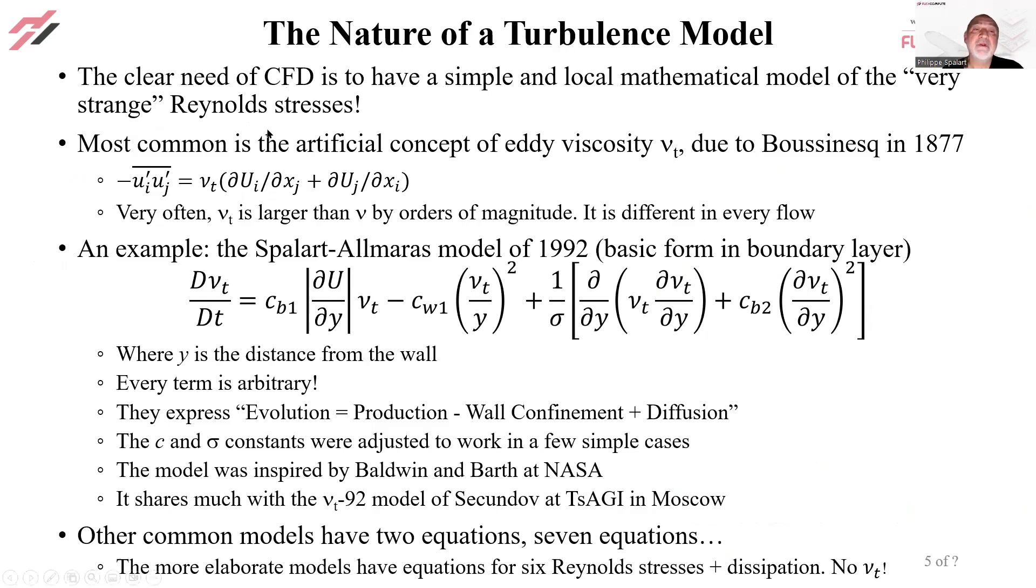Most common is the artificial concept of eddy viscosity νt, due to Boussinesq in 1877: -u'iu'j = νt(∂Ui/∂xj + ∂Uj/∂xi). Very often, νt is larger than ν by orders of magnitude. It is different in every flow. And it is a property of the flow, which is different in a channel and past a circular cylinder and everywhere.